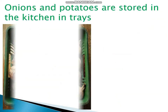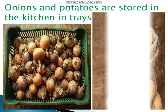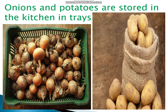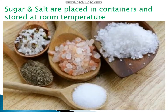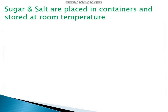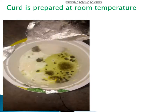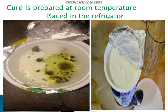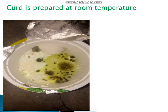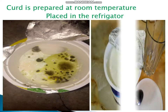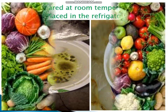Onions and potatoes are stored in the kitchen in trays or shelves at room temperature. Sugar and salt are placed in containers and stored at room temperature in the kitchen. Curd is kept at room temperature but as soon as it sets, it is placed in the refrigerator or used as soon as possible. Such activities are carried out in order to preserve the food so that it does not get spoiled.